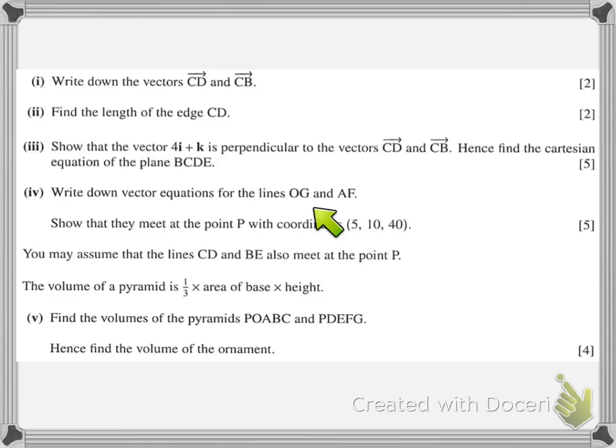We're then going to write down some vector equations. When we see write down, that usually means we can literally just write them down. Little, if any, calculation should be needed there. Show that, so again, we're going to have to show lots of working. They meet at this point, so we'll show that the lines all have this point lying on them. I'm guessing this point P is going to be where the top of the pyramid would have been before it was truncated. Finally, we're given information about how to calculate the volume of a pyramid, and we're going to calculate the volumes of a couple of different pyramids to find the volume of the ornament.